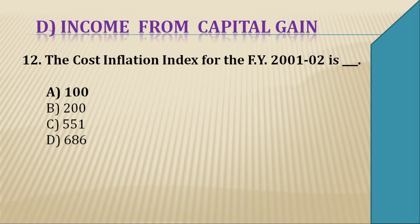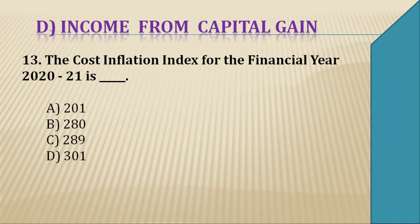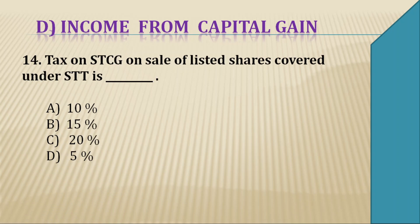Question 12: The Cost Inflation Index (CII) for the financial year 2001-02 is — A — 100, B — 200, C — 551, D — other. The right answer is 100. Question 13: The Cost Inflation Index (CII) for the financial year 2020-21 is ____. The CII for 2020-21 is 301, so the answer is 301.